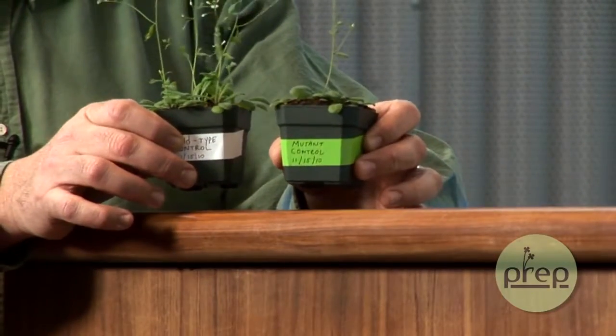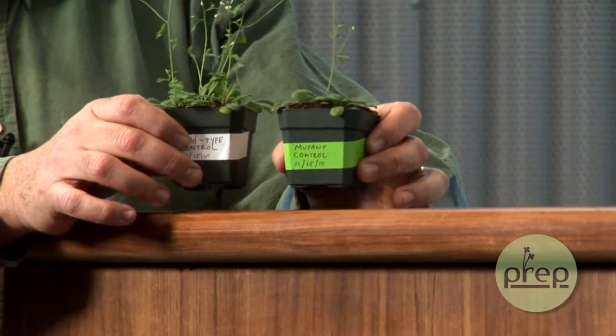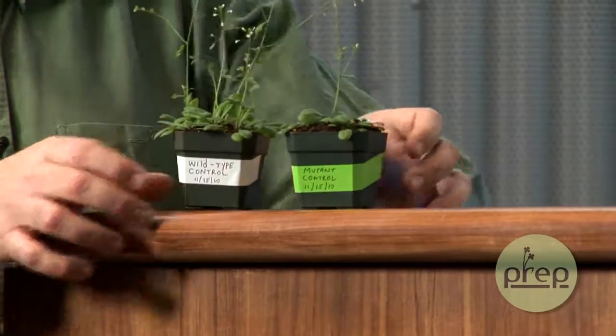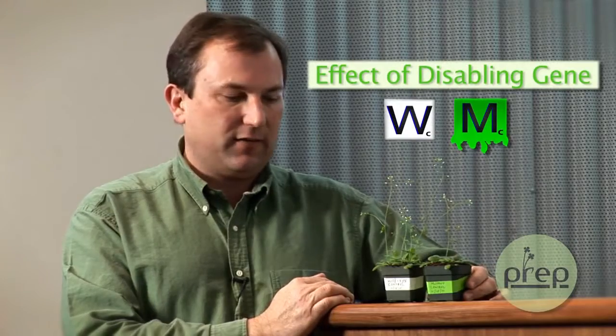When I compare these two pots of plants, I'm asking the question: what's the effect of disabling that gene? That's my primary independent variable, is that genetic alteration. So I want to see what the effect of it is.